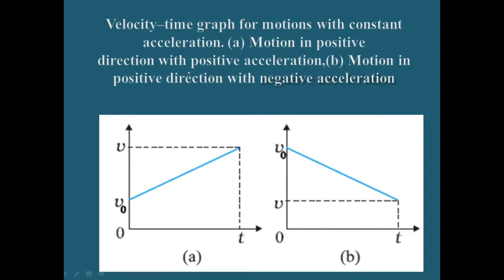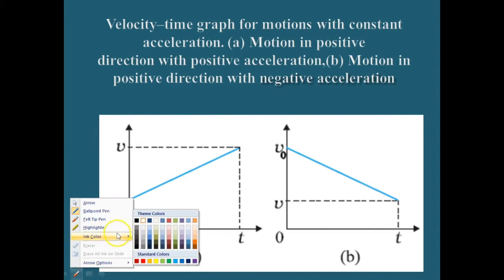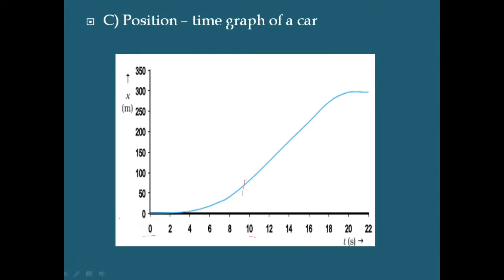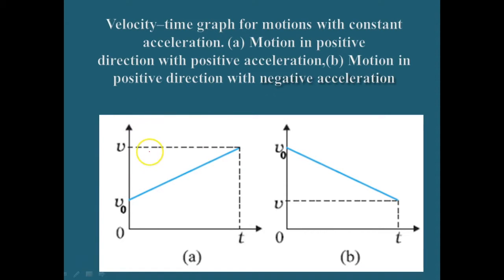The first case: figure A represents an object moving in a positive direction with a positive acceleration. We can consider the motion of a car between t = 0 seconds to t = 10 seconds, where the car is picking up speed — moving in positive direction with positive acceleration. This is the first velocity-time graph case.